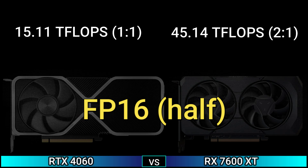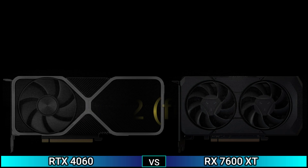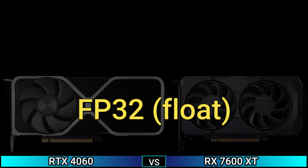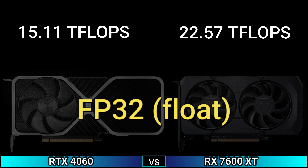FP16 (half): 45.14 TFLOPS (2:1). FP32 (float): 15.11 TFLOPS and 22.57 TFLOPS.